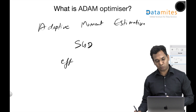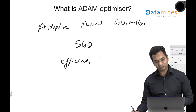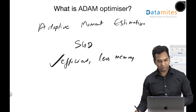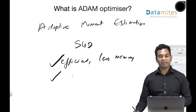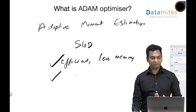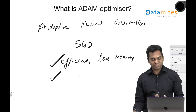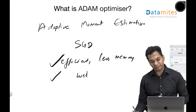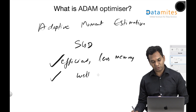Adam is usually fast and efficient. It requires less computation and less memory. And while Adam may not be as accurate as SGD, it usually works very well in practice.